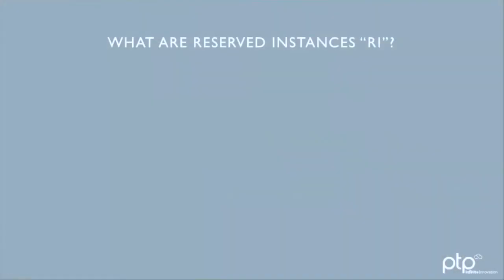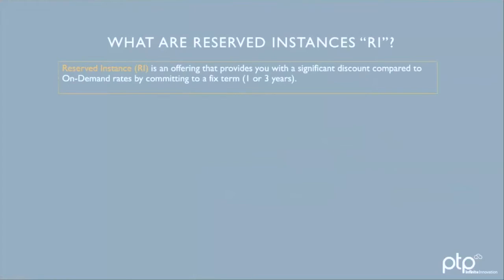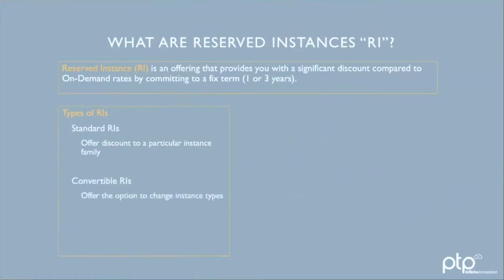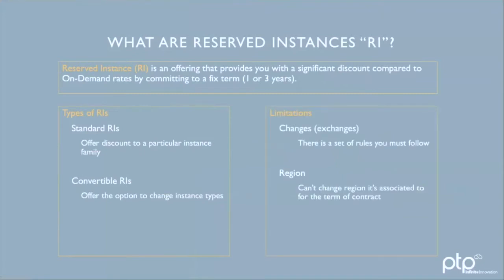What are reserved instances? A reserved instance is an offering that provides you with a significant discount in comparison to on-demand rates in exchange for a one-year or three-year term commitment. There are two major types of RIs: standard RIs and convertible RIs. A standard RI offers a discount on commitment to a particular instance family, whereas convertible RIs offer the option to change instance types during the term for a lesser discount. When you want to change the configuration, you will need to do a convertible RI exchange, where you must follow a set of rules. One thing you can't change, however, is the region — it is fixed throughout the term of the reservation.